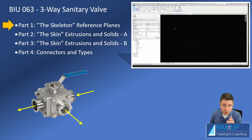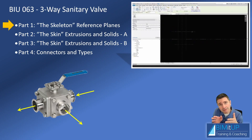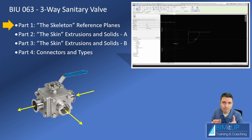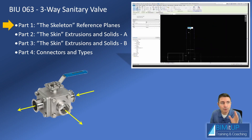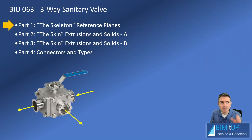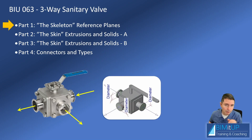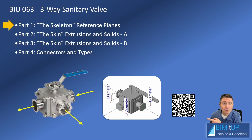Based on the cut sheet, we're going to set up some reference planes so that we can flex our part properly based on the different dimensions that we have. On part two and part three, we're going to create the skin, and then the connectors on part four. We're going to end up with something pretty much like that. If you're interested in the valve, you can download it — just scan the QR code to go to bimitup.com.